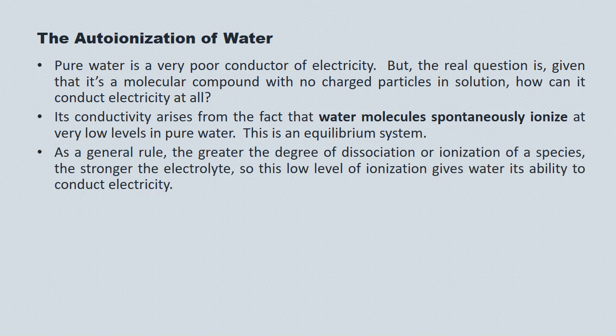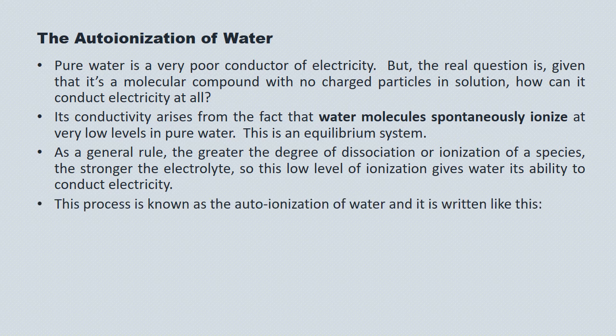As a general rule, the greater degree of ionization or dissociation of a species, the stronger the electrolyte. So this low level of ionization in water gives it the ability to conduct electricity at very low levels. This system is known as the auto ionization of water, and it looks like this.